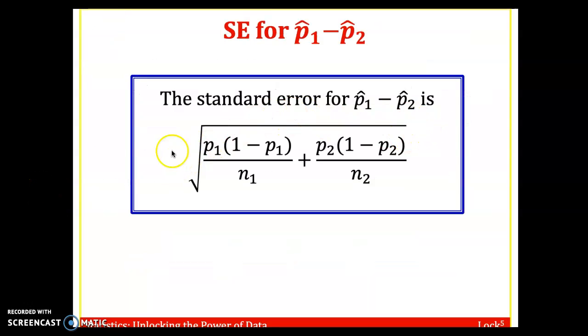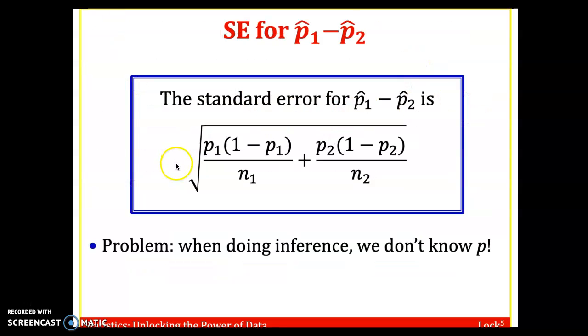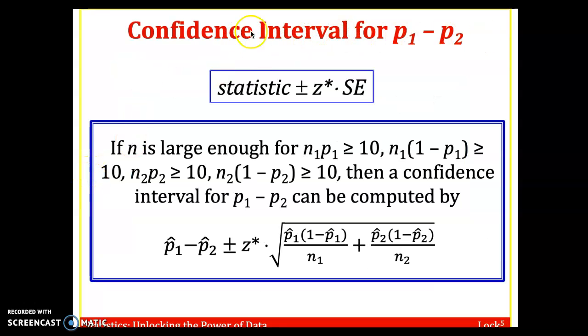There could be a problem, though. This last example, we have a census, so we have the whole population parameter information. But generally, we don't know the population proportions. One way to do that is to substitute p-hat, which is our best guess for p. If you have a sample, we're going to use p-hat. And that's what we're going to use for confidence intervals.